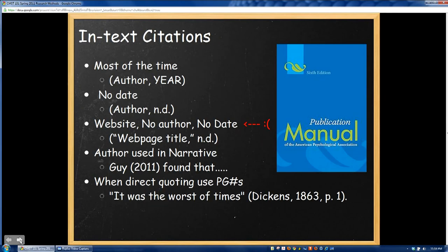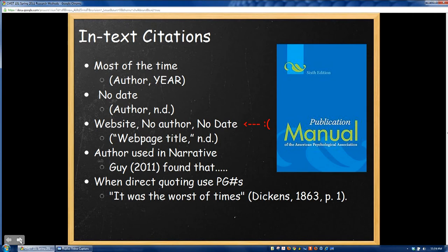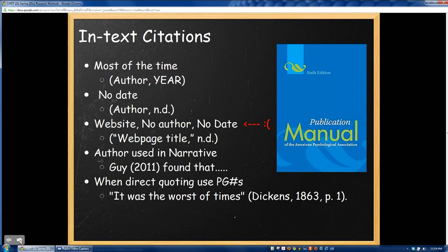The next big problem I noticed looking over your outline drafts was the complete lack of APA formatting and APA references — very few people did their in-text citations right. On a note related to academic honesty, if you put information in your speech or paper and you don't cite it, then you're committing plagiarism. When you give your speech, you need to cite all sources verbally, and when you write your outline, you need to cite all sources in the text using in-text citations. Most of the time, if you have a good quality source from a journal article or book, in-text citations are pretty simple: add a parenthesis, give the author's last name, comma, and the year of publication, close parenthesis, and throw a period on there.